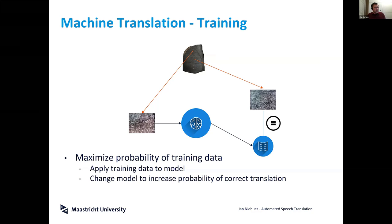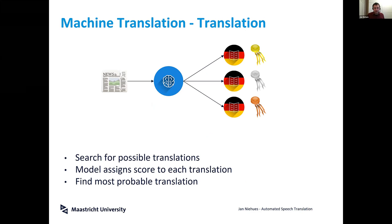During translation, the model searches for possible translations. Of course we cannot generate all possible English or German sentences, but we do an intelligent search generating several possible translations. The model then gives a probability to each, and across all sentences we find the most probable translation.